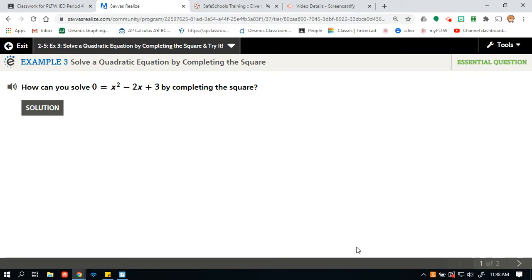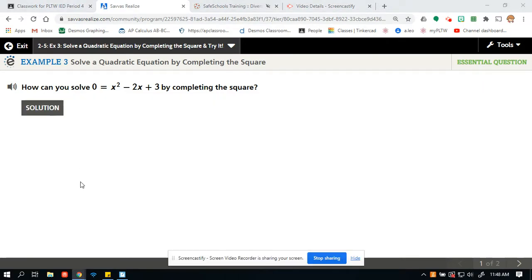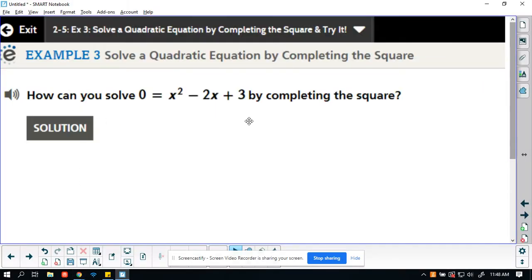I showed you a little bit of this in the last example, so we're going to dive a little deeper into it. All right, so how can you solve—oh, I think I already moved it over—how can you solve 0 = x² - 2x + 3 by completing the square?